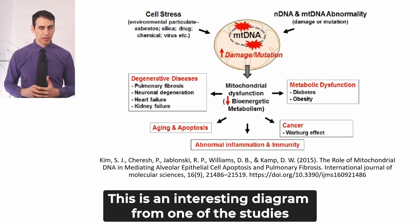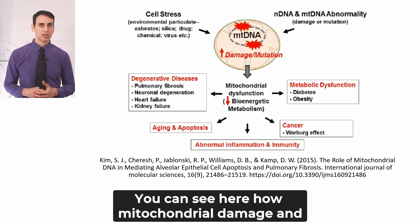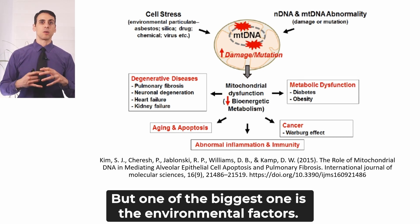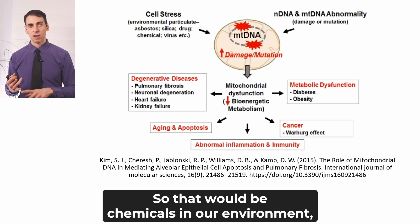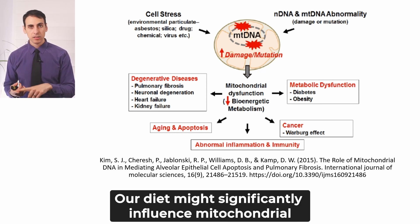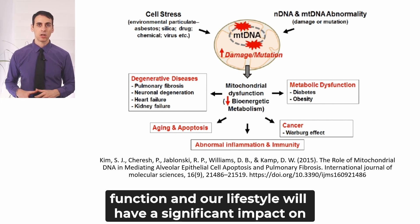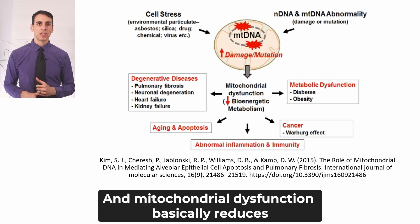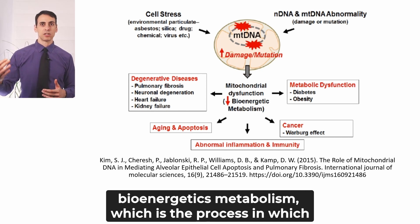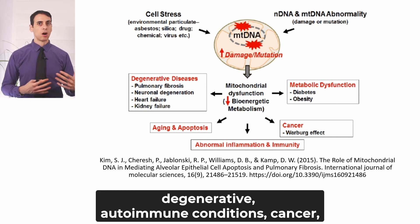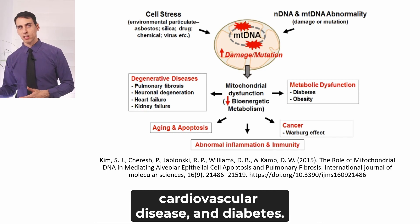This is an interesting diagram from a study published in 2015. It shows how mitochondrial damage and mutation can be caused by multiple factors — among them genetics, but one of the biggest is environmental factors such as chemicals in our environment, heavy metals, and pesticides. Diet may significantly influence mitochondrial function, and lifestyle has a significant impact on cellular and mitochondrial function. Mitochondrial dysfunction reduces bioenergetic metabolism — the process in which energy is created — and promotes chronic inflammation and chronic disease, such as metabolic, degenerative, and autoimmune conditions, cancer, cardiovascular disease, and diabetes.